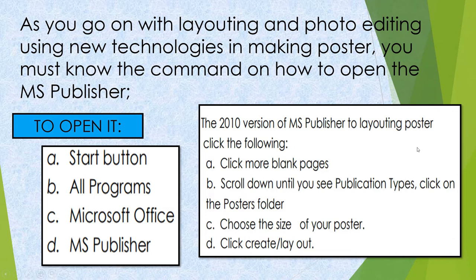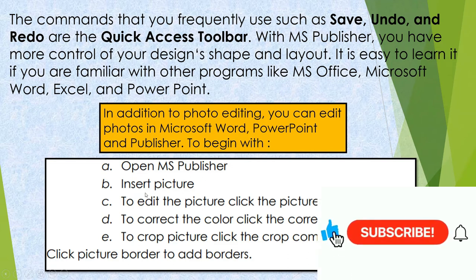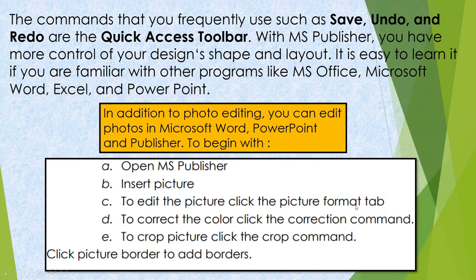Commands you frequently use such as Save, Undo, and Redo are found in the Quick Access Toolbar. With MS Publisher you have more control over your design, shape, and layout, and it is easy to learn if you are familiar with MS Office programs like Word, Excel, and PowerPoint. To begin photo editing, open MS Publisher and insert a picture. Click the Picture Format tab to edit it. Use the Correction command to correct color, the Crop command to crop the picture, and Picture Border to add borders.